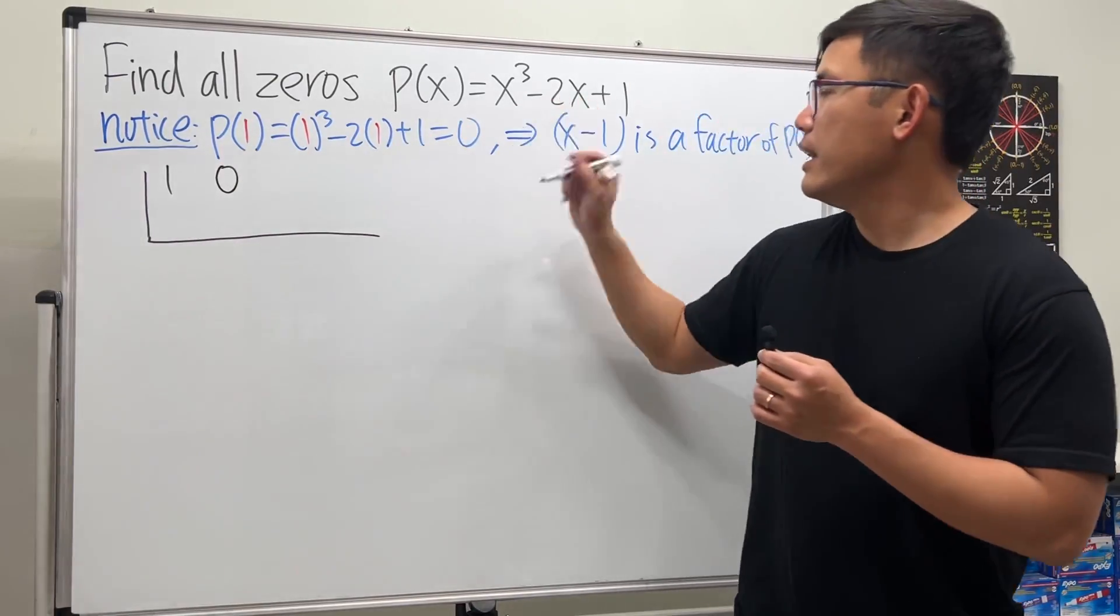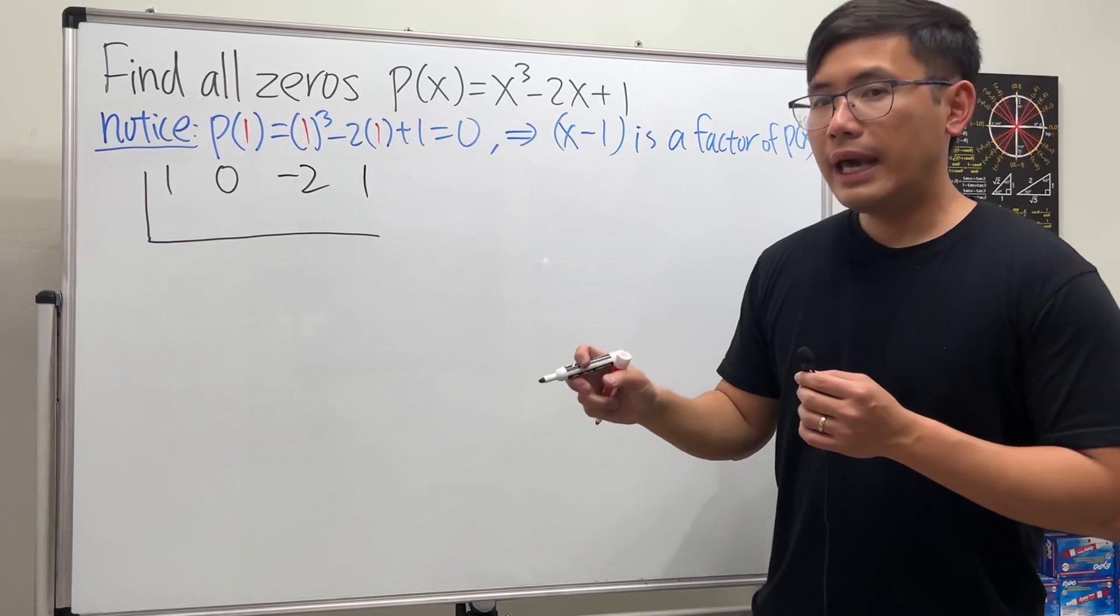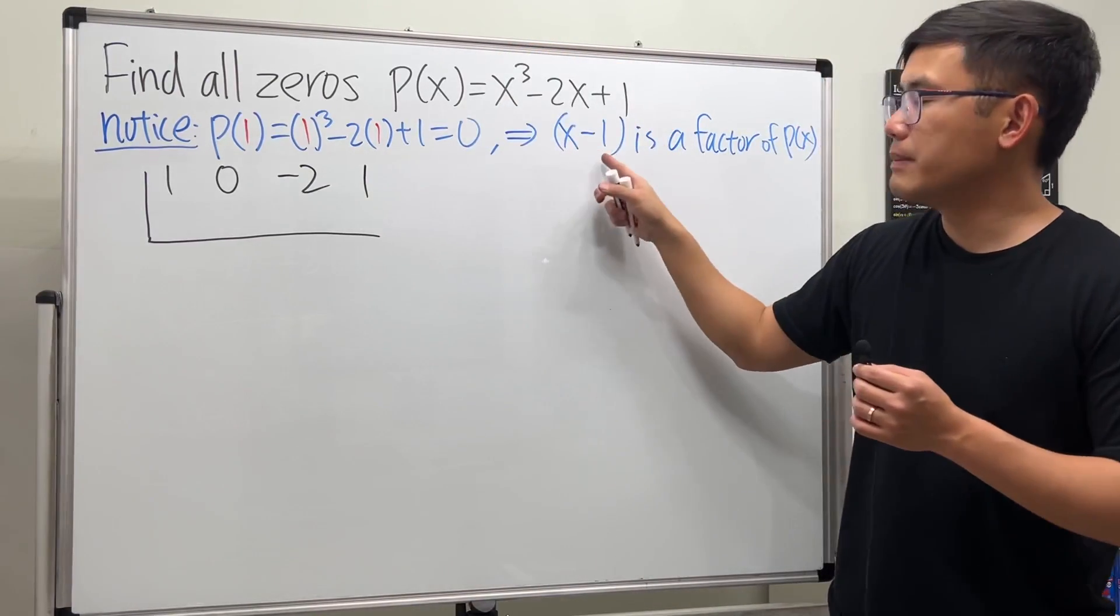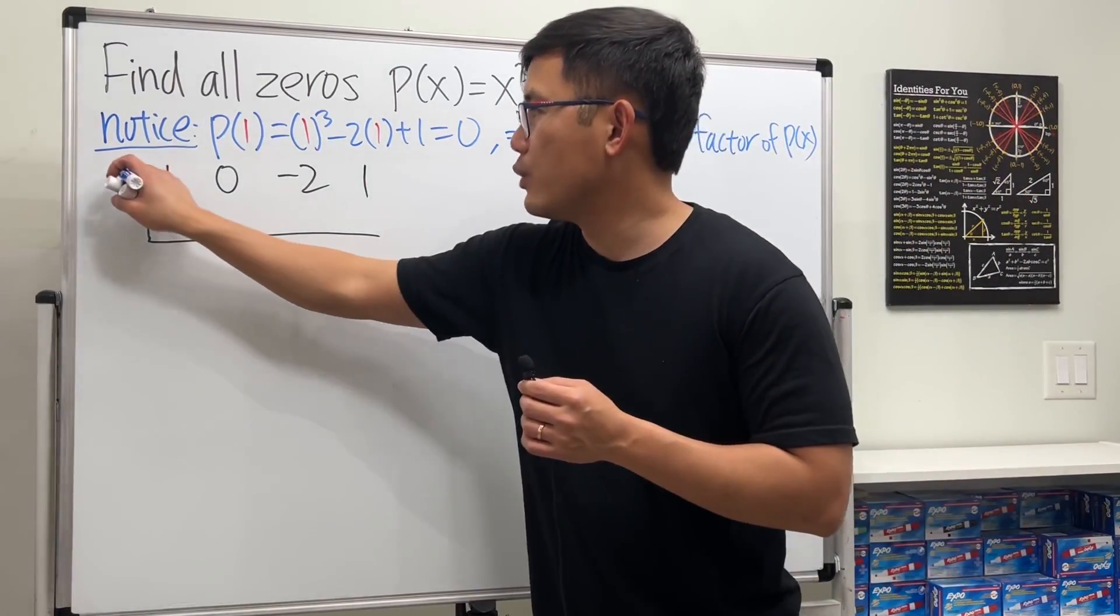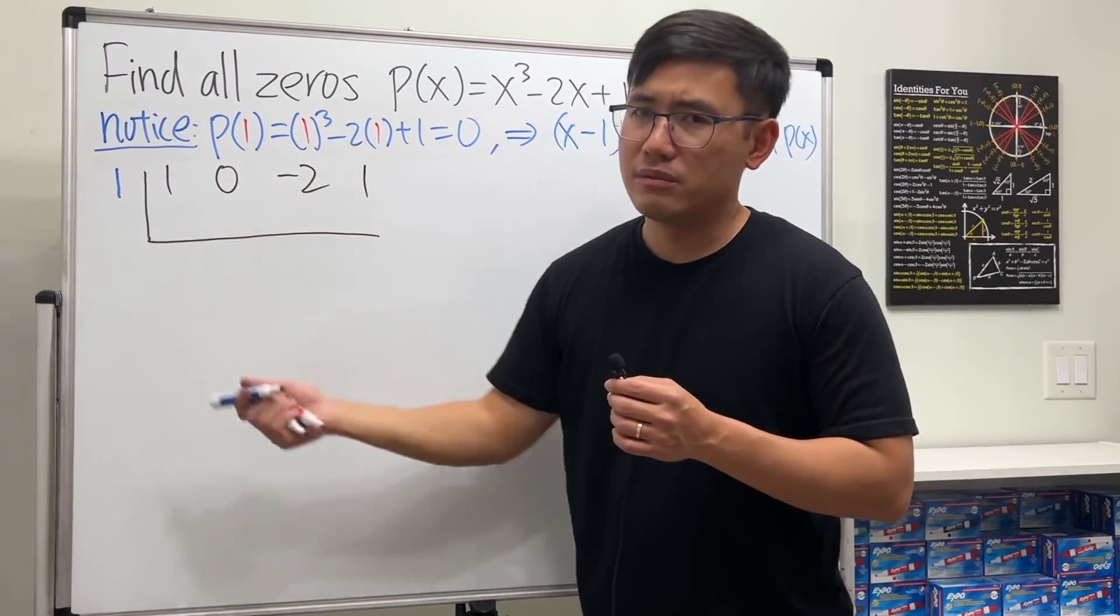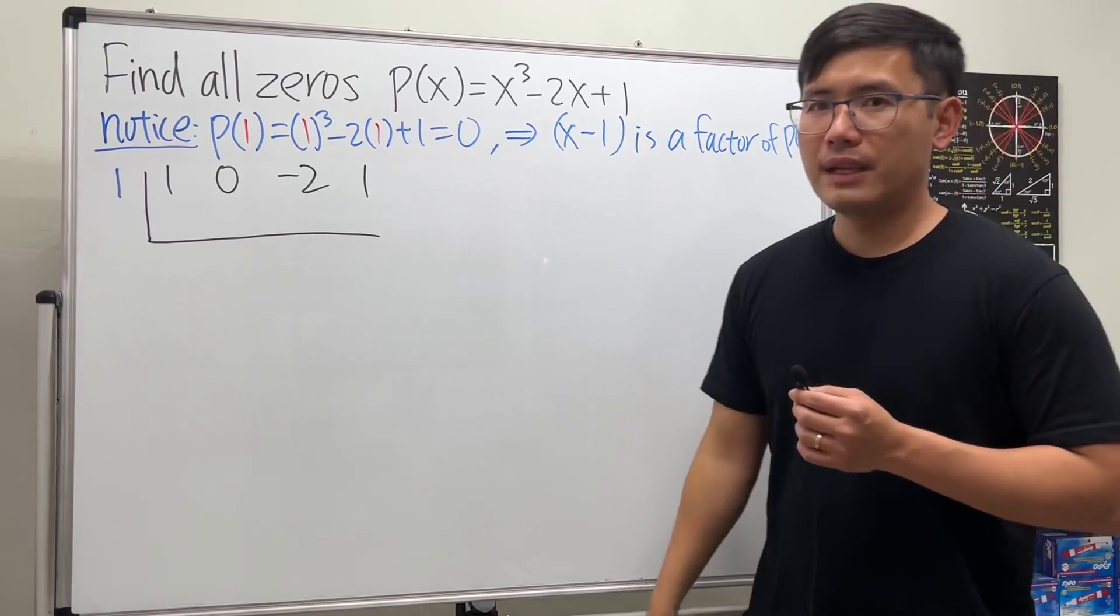Because we're dividing this by x minus one, put down the one on the outside right here. You just have to remember to do the opposite.